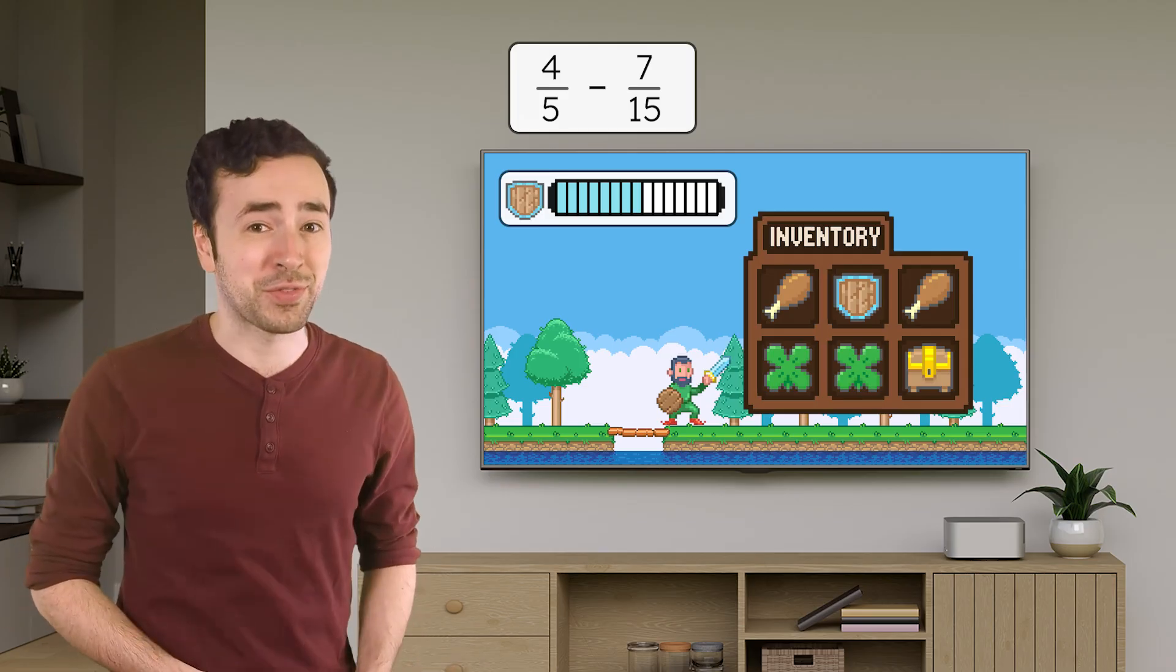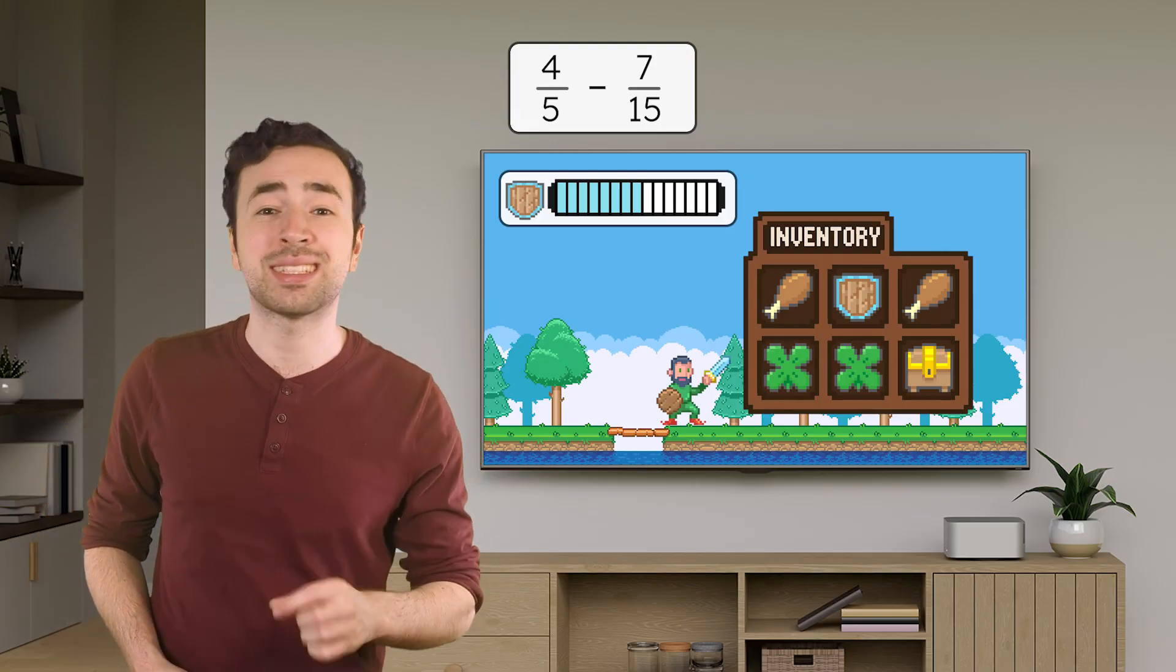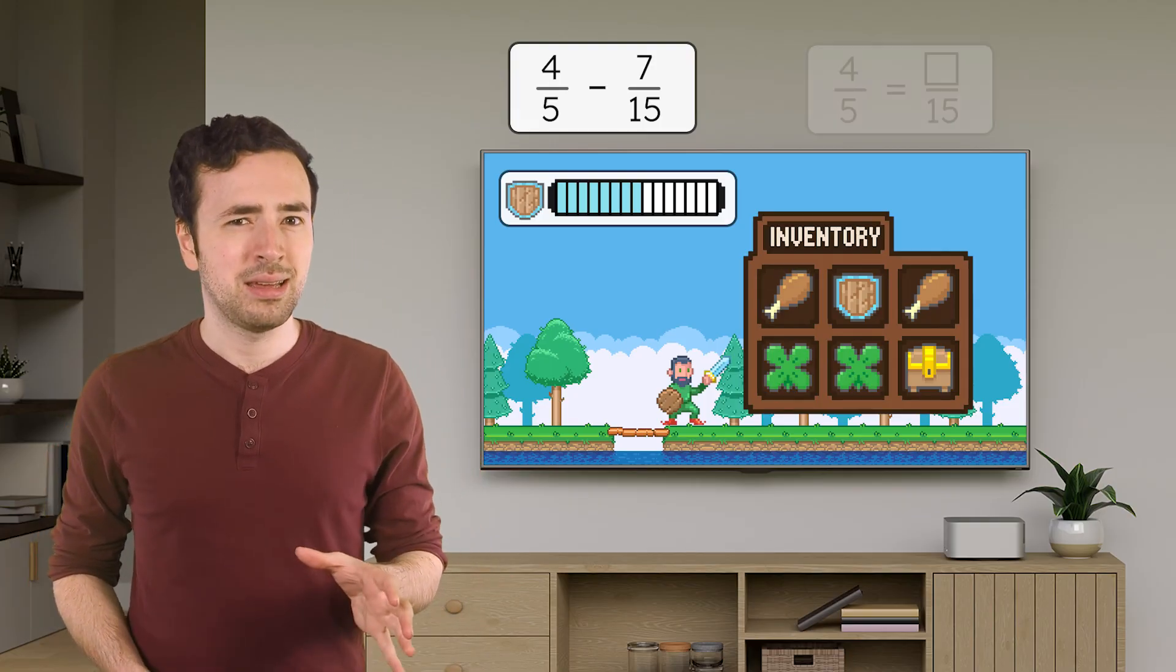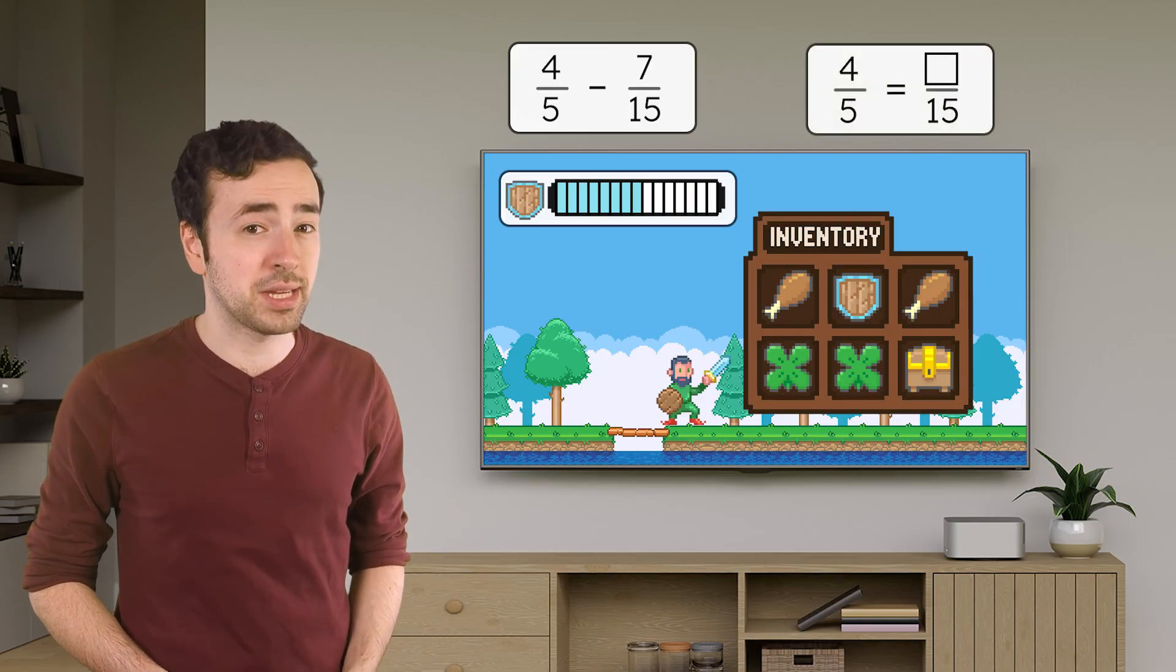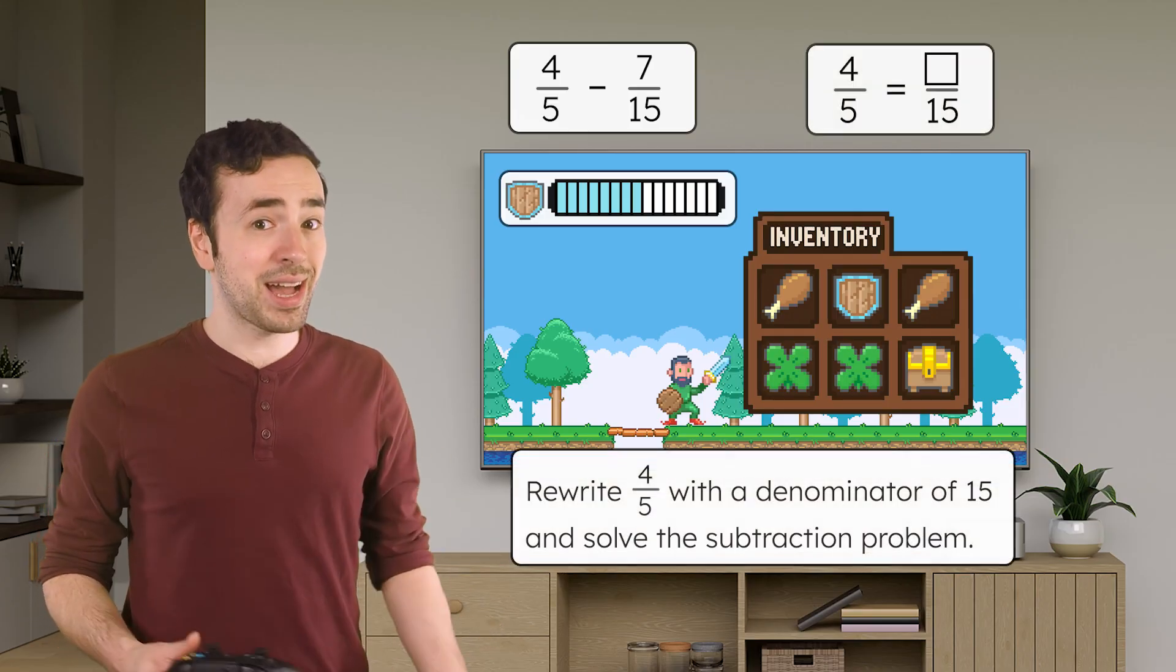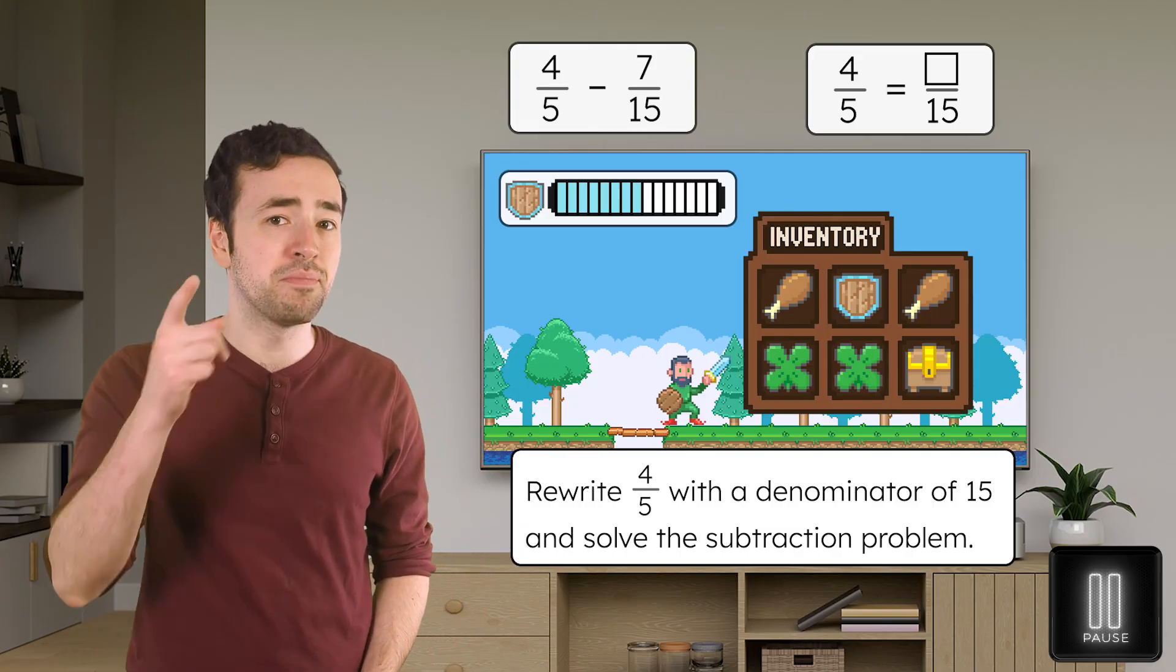Not yet. The denominators are different. We need to find a common denominator so we're subtracting pieces that are the same size. Is there a way to represent four-fifths with a denominator of fifteen? Yeah! Pause here to rewrite four-fifths and solve the subtraction problem in your guided notes.